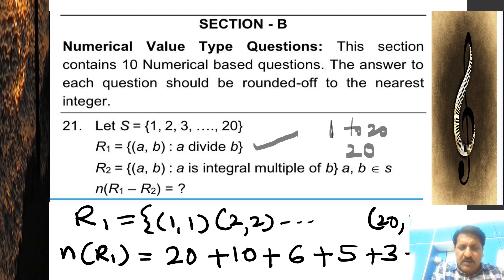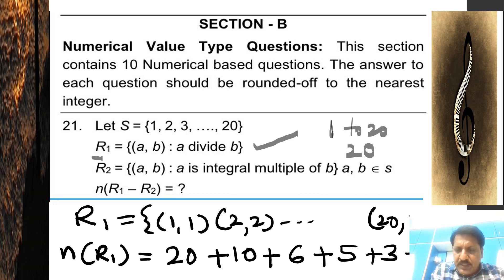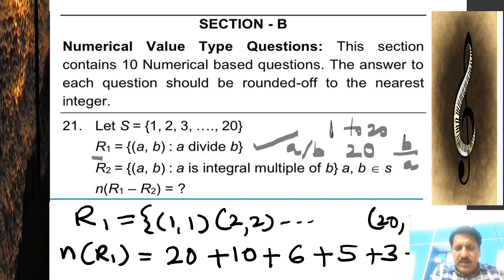Relation R1 is defined as the set of pairs (a, b) where a divides b — that is, b is divisible by a. This is R1.